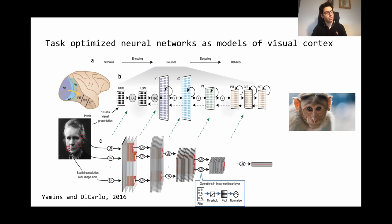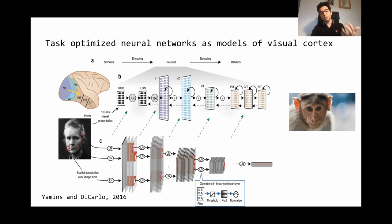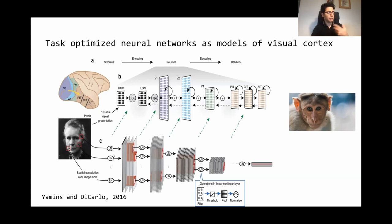One of the most well-known examples is from Yamins and DiCarlo in 2014. They showed that if you train a neural network to do object categorization, the model turns out to be a good model of the ventral pathway in the primate brain. The representations that different layers learn after training on object categorization are good predictors of neural responses along the ventral pathway of the monkey brain, with a rough match between early layers and early areas, and deep layers and late areas.